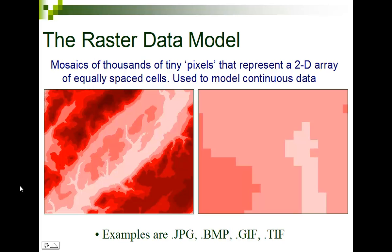Raster data models are basically thousands of tiny pixels used to represent continuous data — things that happen everywhere, like temperature, elevation, air pressure, or precipitation. If I go from one place to another, I expect to still have temperature and air pressure there. You can see how it models here: the darker the pixel, the higher the elevation; the lighter, the lower.